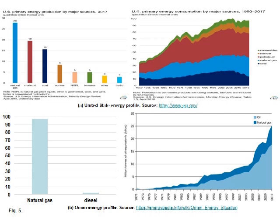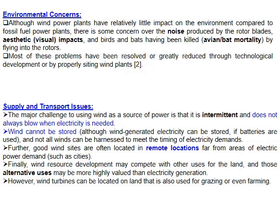Comparing energy profiles: the United States in 2017 had a diverse mix including natural gas, crude oil, coal, nuclear, wind, biomass, and solar. In Oman, approximately 97.5% of electricity plants use natural gas, with only 2.5% using diesel in rural areas such as Masirah Island. This energy dependence on natural gas needs to change.